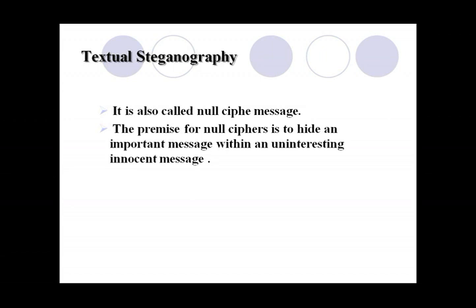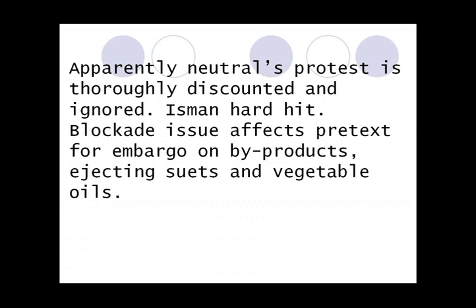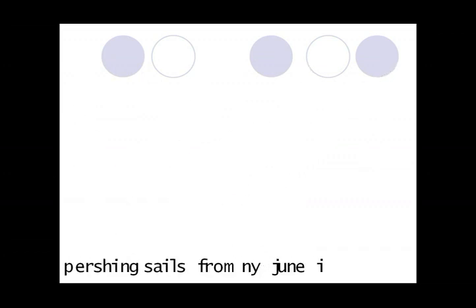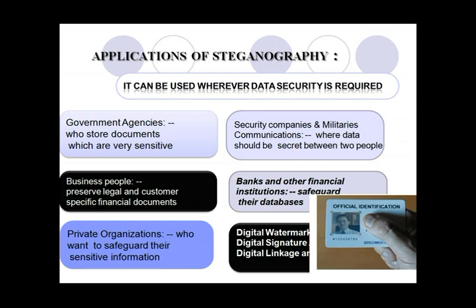Textual steganography uses an uninteresting message to conceal the real one. Generally, we do not like reading uninteresting messages, so the whole hidden message is embedded in an uninteresting message. Here is an example: 'Apparently neutral protest is thoroughly discounted and ignored.' The hidden message is concealed within this uninteresting text.